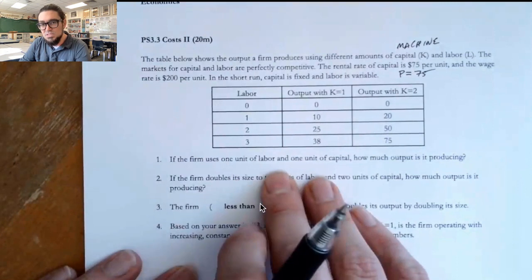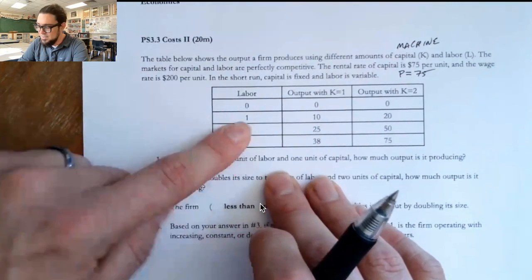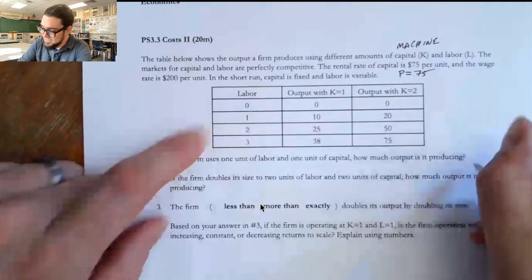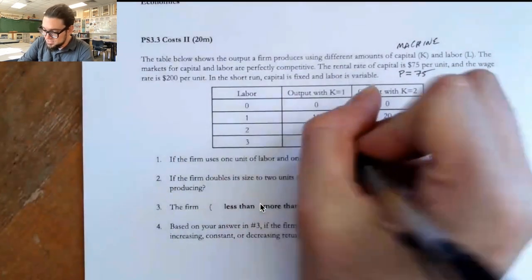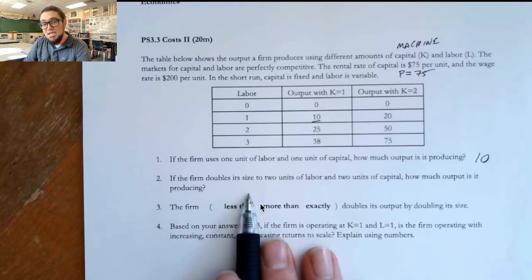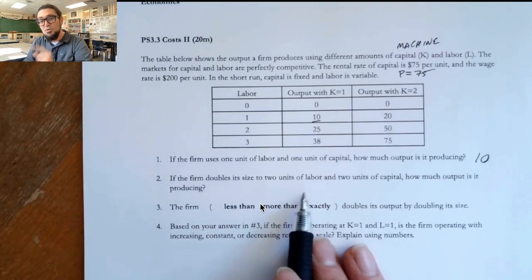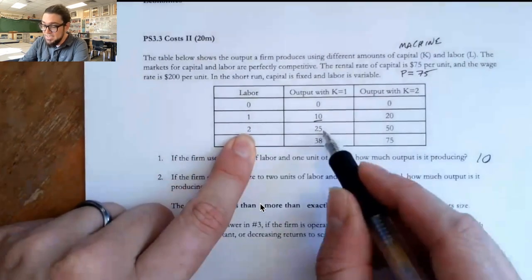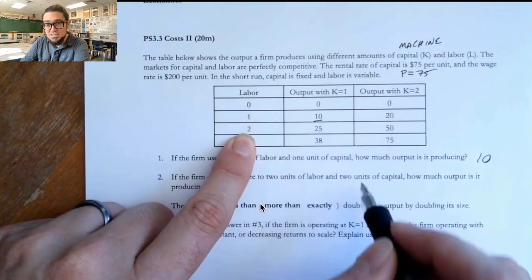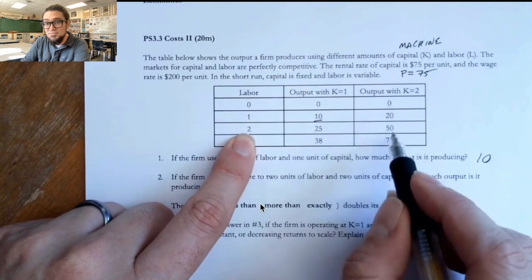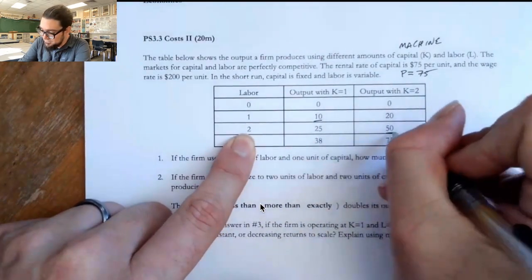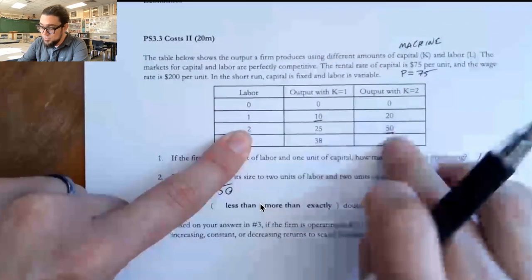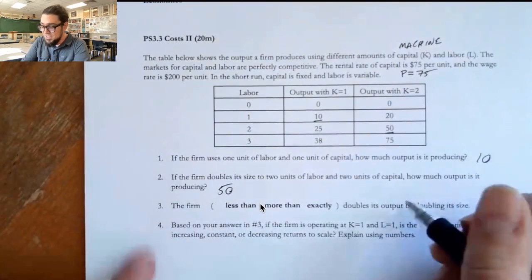And so if the firm uses one unit of labor and one unit of capital, how much does it make? One unit of capital, they make 10. That's just from looking in this table. If the firm doubles its size to two labor and two capital, how much output is it producing? So now we go from one labor to two, but we also doubled to two units of capital. So we actually went to 50, right? 50. That's from two workers and two machines. So we went from 10 to 50.